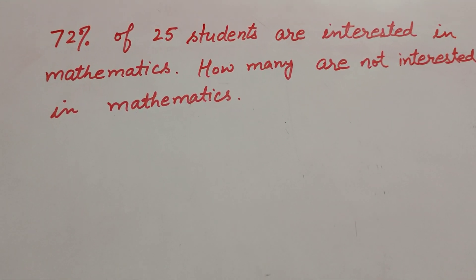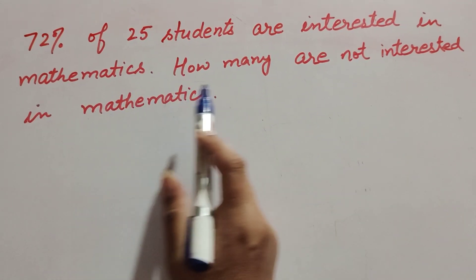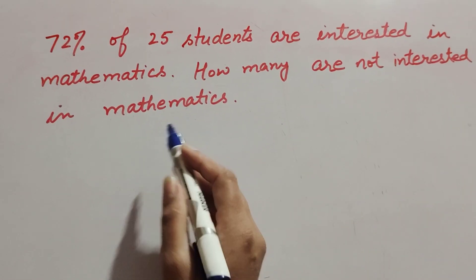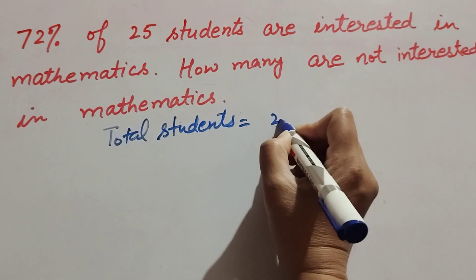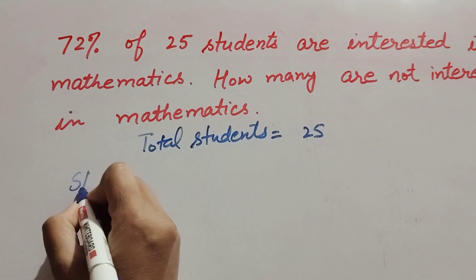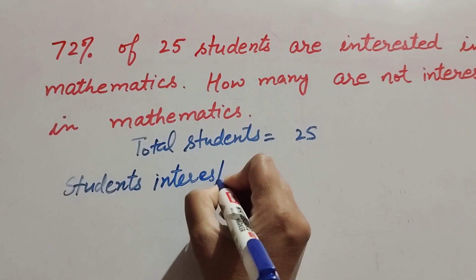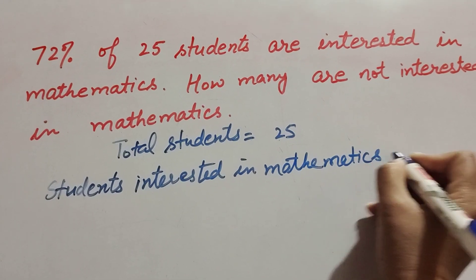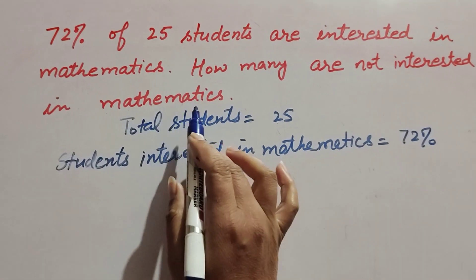Hello friends, welcome to my channel. In this video we discuss: 72 percent of 25 students are interested in mathematics — how many are not interested in mathematics? The total number of students is given as 25, and the students interested in mathematics is also given as 72 percent.